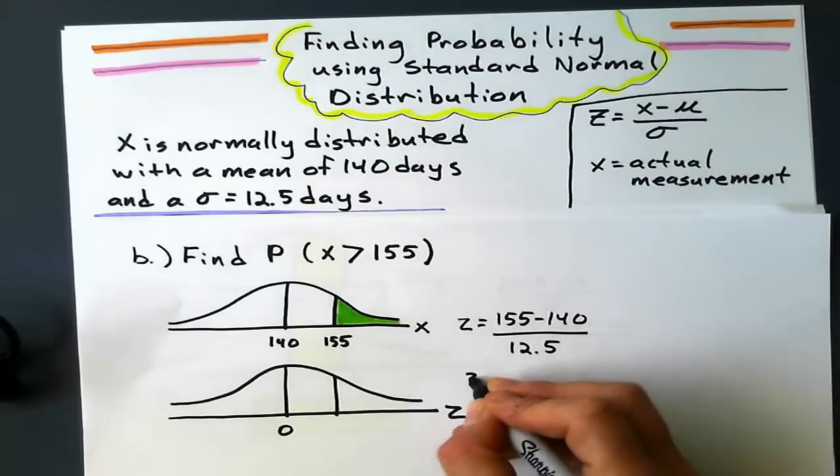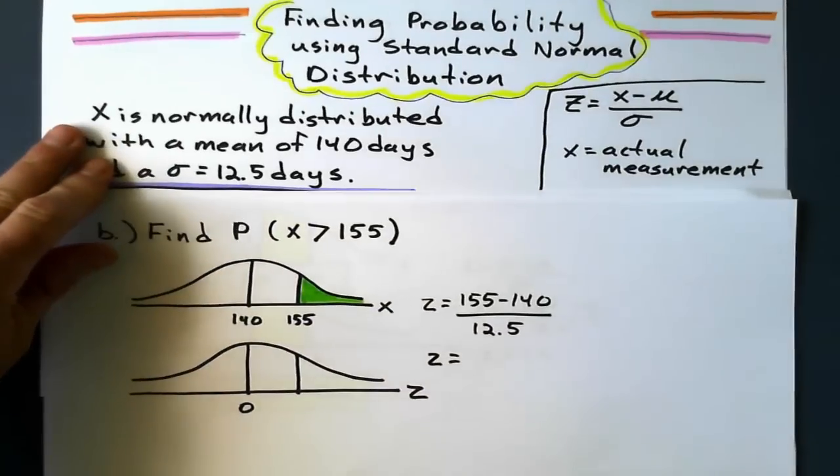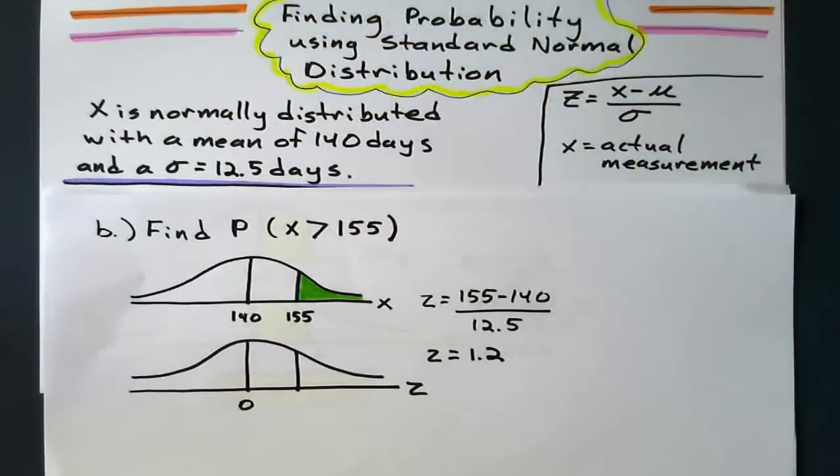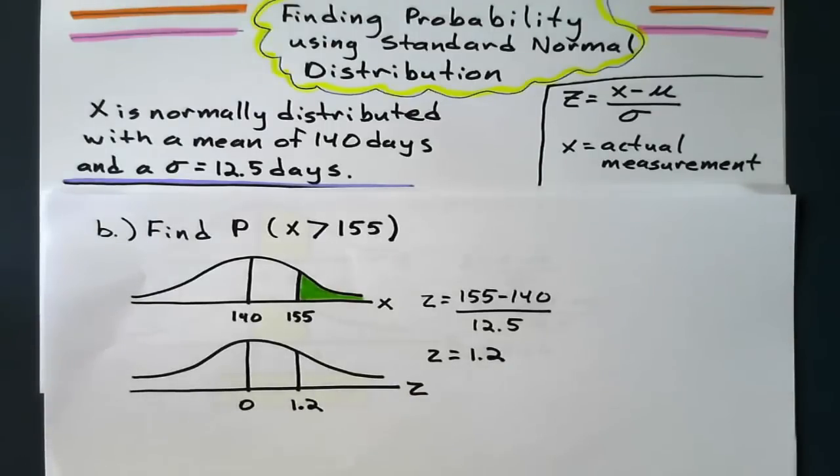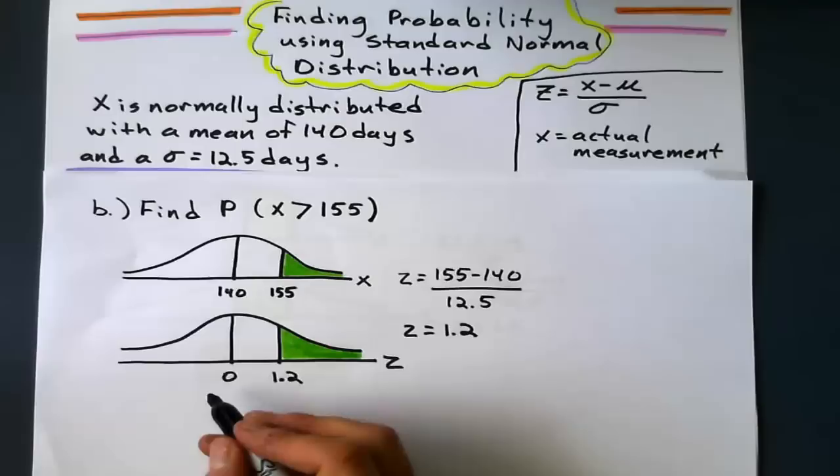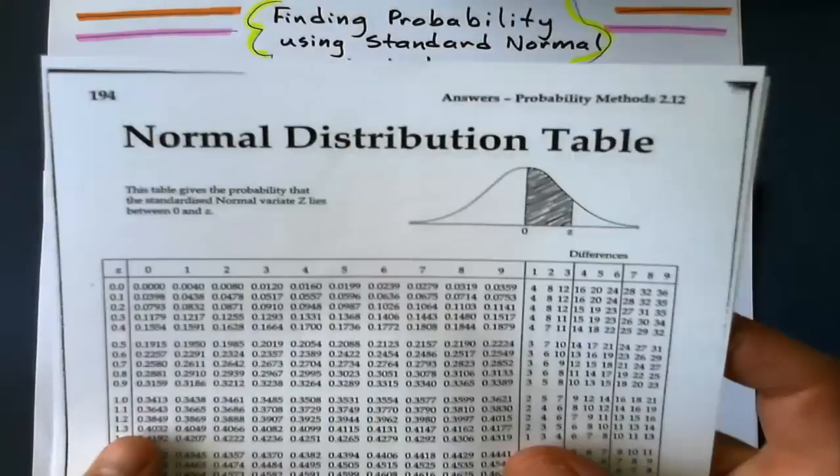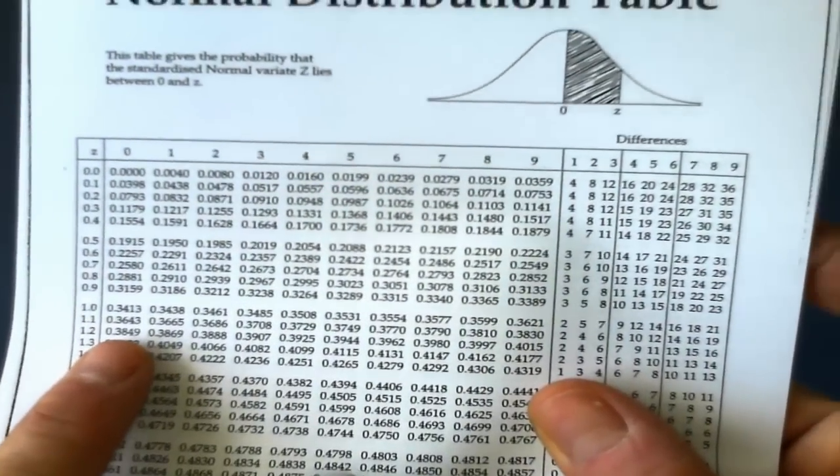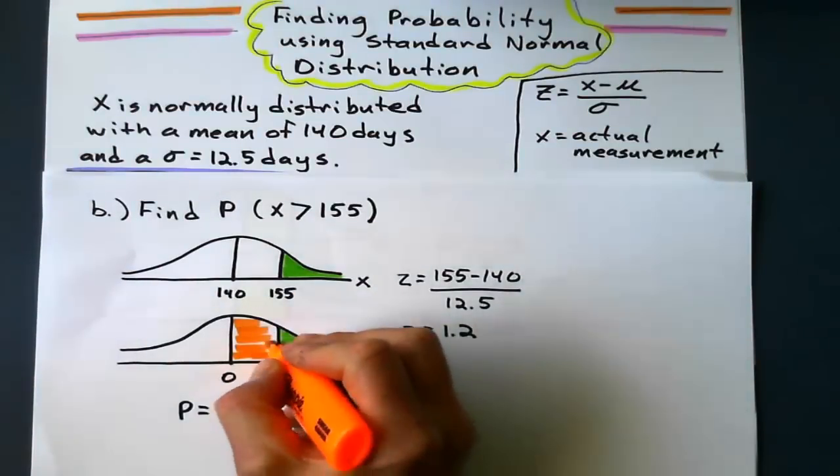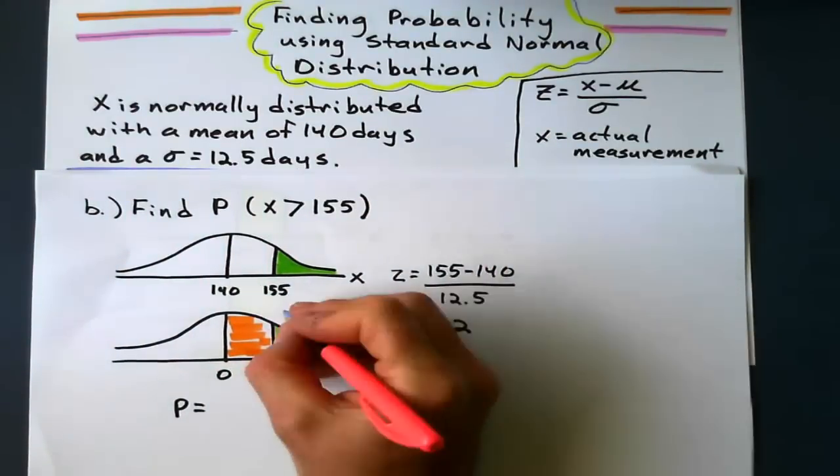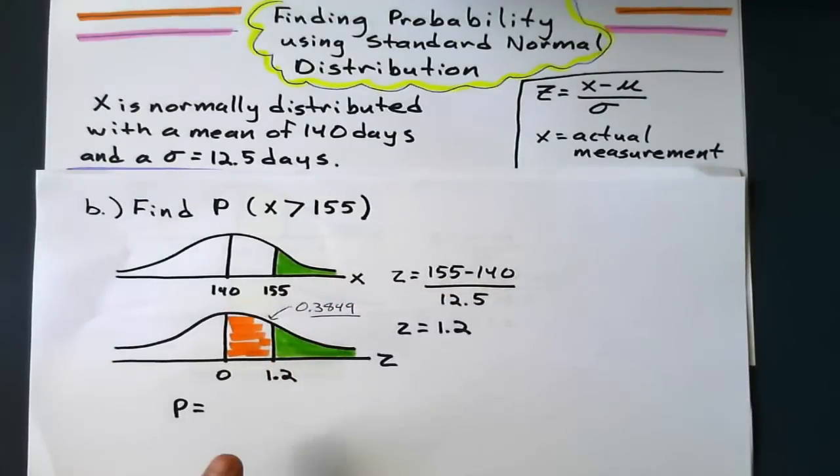155 minus the mean divided by 12.5 gives me a Z value. Let's work it out here. What is that Z value? It is 1.2. So 1.2. Shade the right of 1.2. Now when I look up the Z value of 1.2, it's going to give me the value that's attached to the mean. It doesn't give me the tail end. It doesn't give me the tail end. It gives me the 1.2 right here. That's what the table will give me. Not the green part.